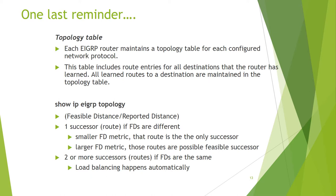One last reminder about the topology table: each EIGRP router maintains a topology table for each particular network protocol. This table includes route entries for all destinations the router has learned. It stores IP, EIGRP topology, feasible distance, and reported distance. Routes with the smallest FD metrics are the only successors. Routes with larger FD metrics may qualify as feasible successors. When two or more successor routes have the same FD, load balancing happens automatically.